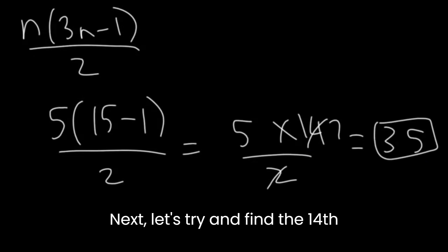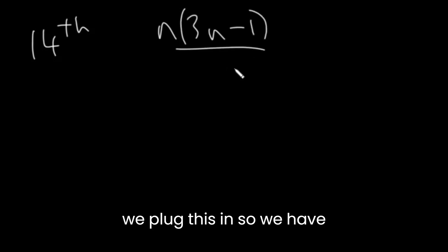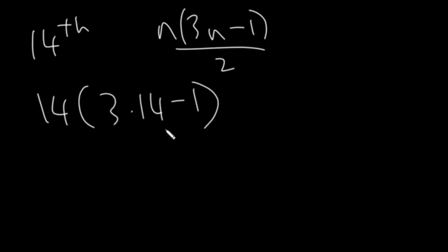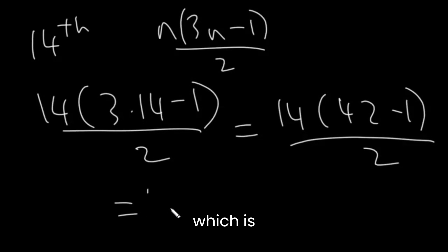Next, let's try and find the 14th pentagonal number. So the formula is n times 3n minus 1 divided by 2. We plug this in, so we have 14 times 3 times 14 minus 1 divided by 2. This is 14 times 42 minus 1 divided by 2, which is 14 times 41 divided by 2.